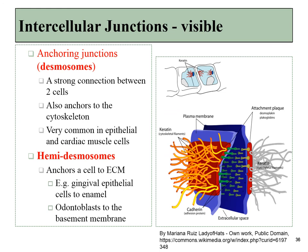Next are desmosomes, also called anchoring junctions. These are large structures between two cells that anchor them together and then anchor that connection to the cytoskeleton, making for a very strong connection. We find these in epithelial cells and cardiac muscle cells. An anchoring junction that attaches to the extracellular matrix rather than another cell is called a hemidesmosome — half of an anchoring junction — another way to keep a cell in place by anchoring it to an extracellular matrix protein.